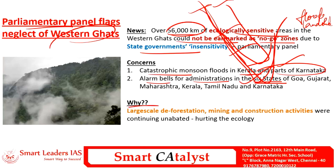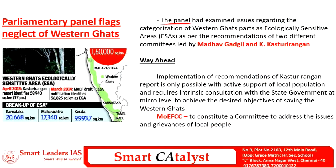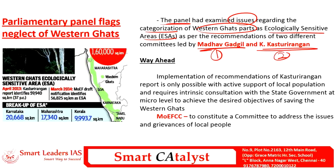The Western Ghats are under threat due to anthropogenic activities including large-scale deforestation, mining, and construction activities which are hurting the ecology of this biodiversity hotspot. The parliamentary panel also examined issues regarding categorization of Western Ghats as ecologically sensitive areas as per recommendations of two committees: the Madhav Gadgil Committee and the Kasturi Rangan Committee. The Kasturi Rangan report identifies nearly 60,000 square kilometers as ecologically sensitive area, and the Ministry of Environment and Forest Affairs draft notification identifies nearly 56,000 square kilometers, but the six states are not acting on this notification.